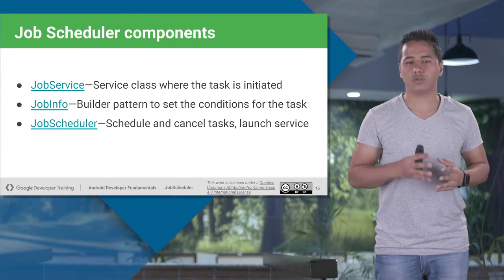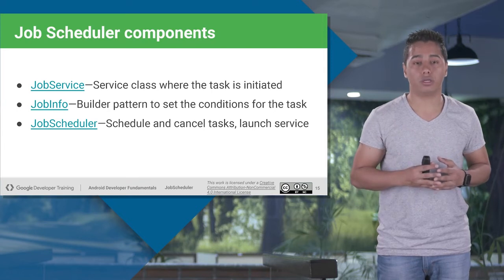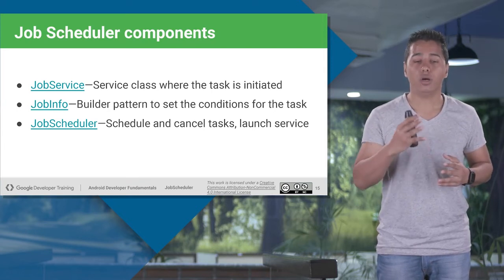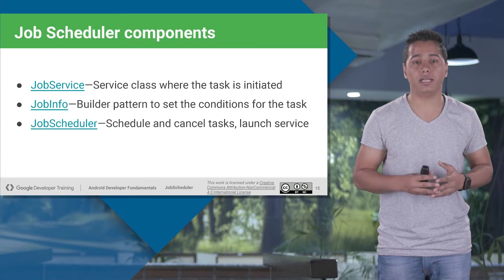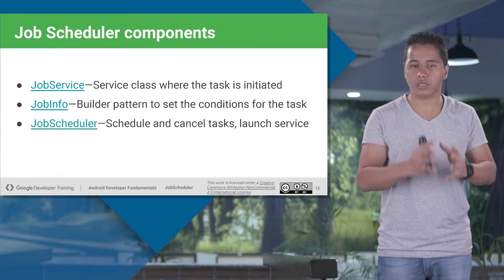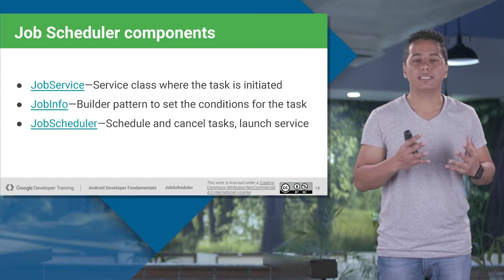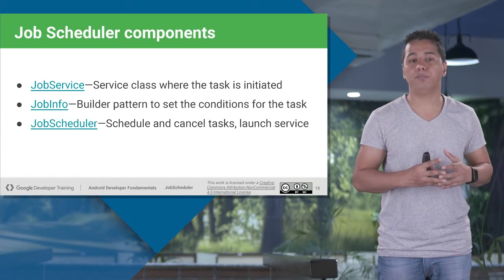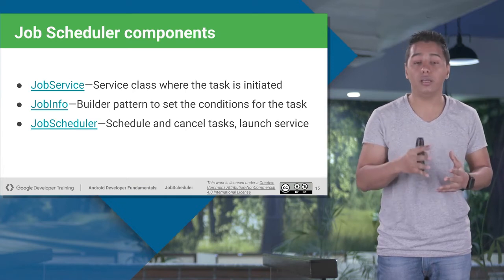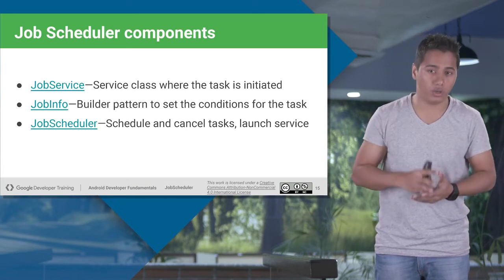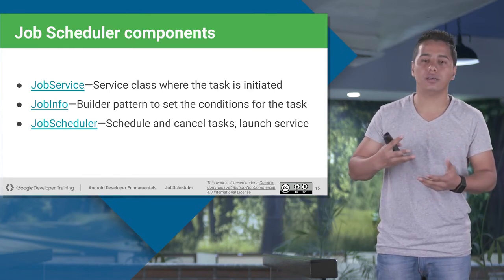Let's talk about Job Scheduler components. We need JobService, JobInfo class, and then the JobScheduler class. JobService is a class — more precisely, you'll be creating a subclass — which will initialize all your tasks. This is where you will put the tasks for your Job Scheduler. The next class is JobInfo, which is a builder pattern class that builds and sets the conditions for your tasks — like triggering tasks only when there is Wi-Fi, or only when your device is idle.